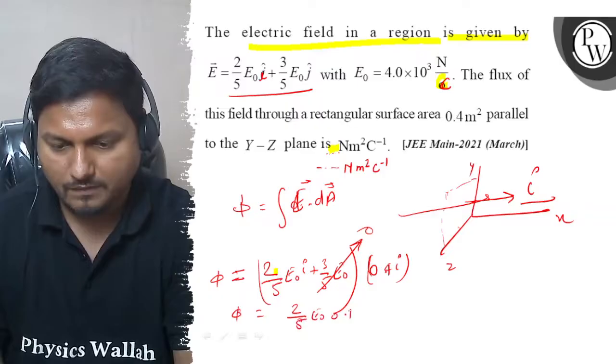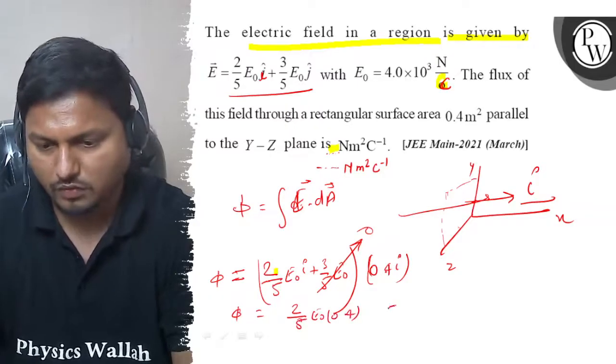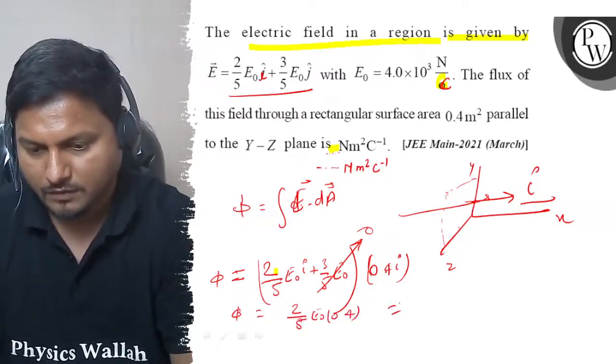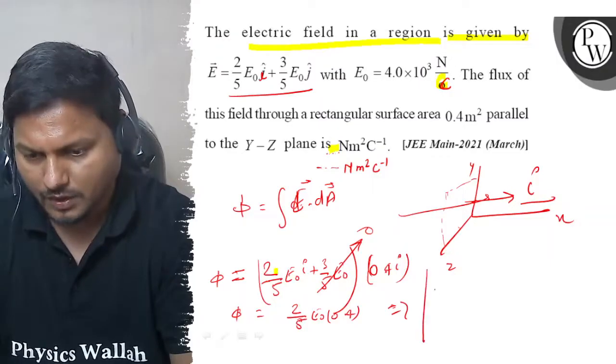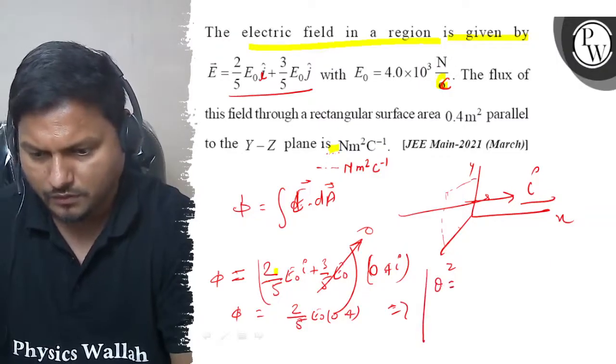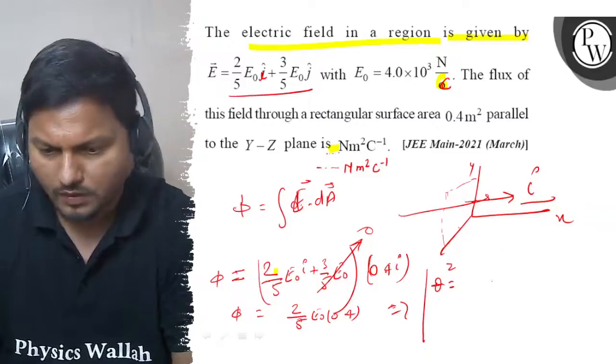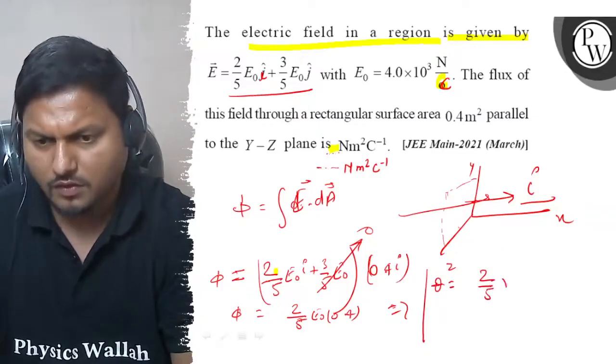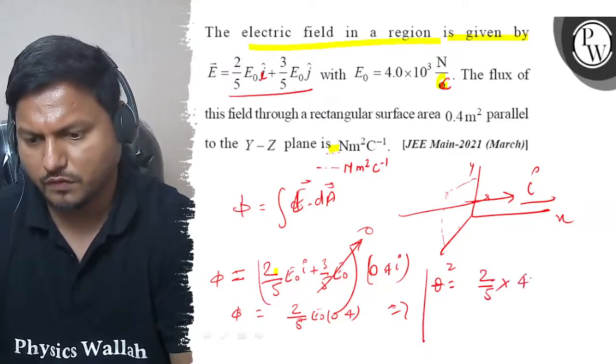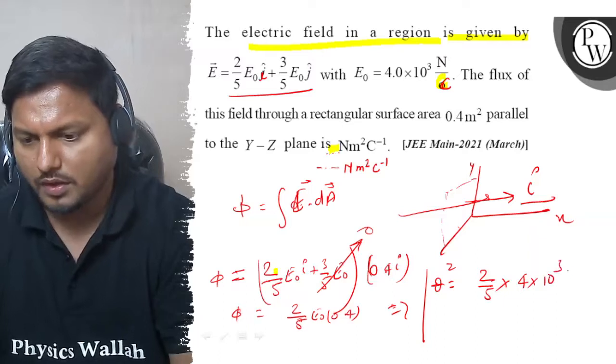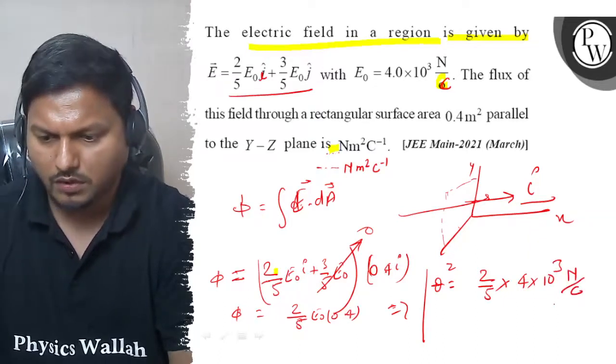We can write phi equals to 2 by 5 times E naught. E naught is given in the question as 4 into 10 to the power 3 newton per coulomb.